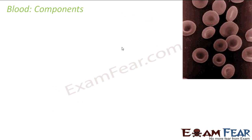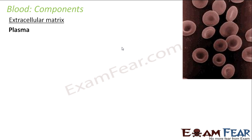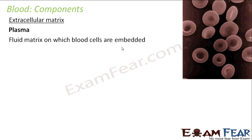Now, blood has many components — different types of components are present inside the blood. The first component is the plasma, sometimes also known as blood plasma. This is the extracellular matrix — the fluid-like thing which fills the blood. It is the fluid matrix in which the blood cells are embedded. Blood is nothing but a tissue, and any tissue is made up of cells. So blood consists of a fluid-like structure called blood plasma, on which the blood cells are embedded.